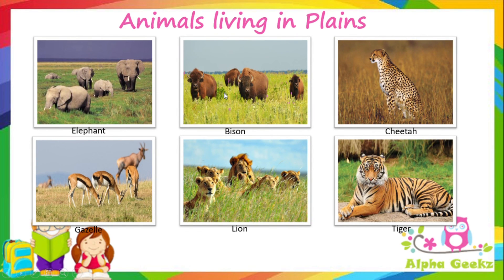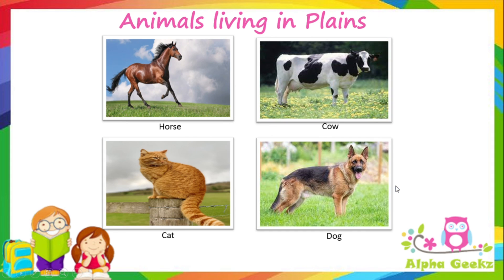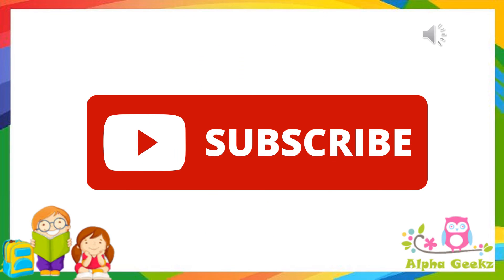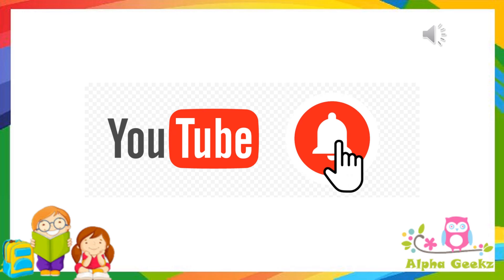Elephants, bison, cheetahs, gazelles, lions, and tigers are some of the large wild animals living in plains. Horses, cows, cats, and dogs are also animals living in plains and are known as domestic animals. If you liked this video, hit the like button, subscribe, and press the bell icon to get new notifications. Thank you!